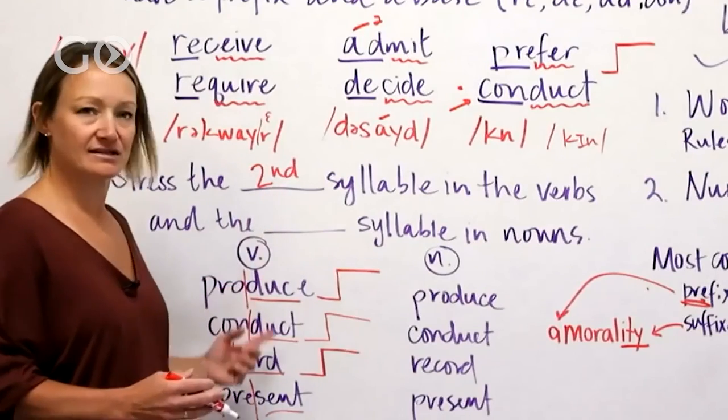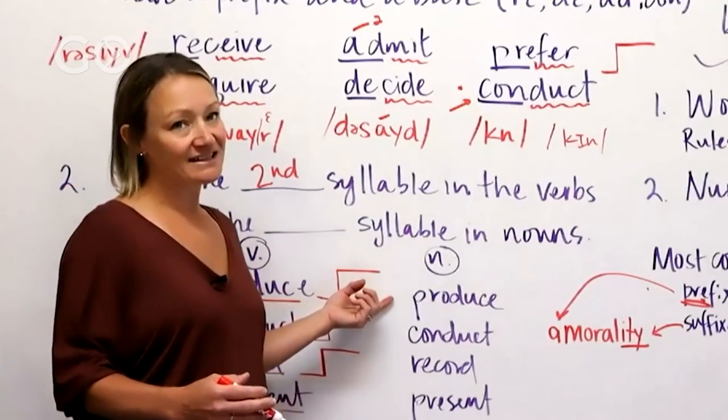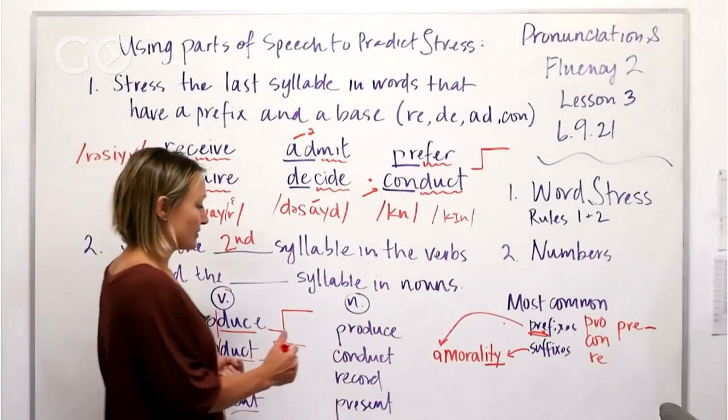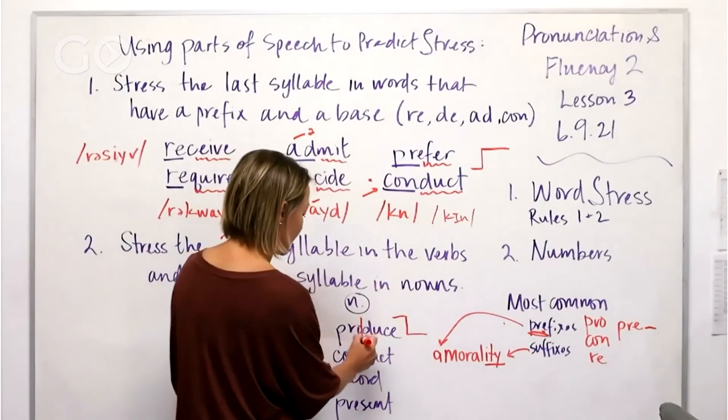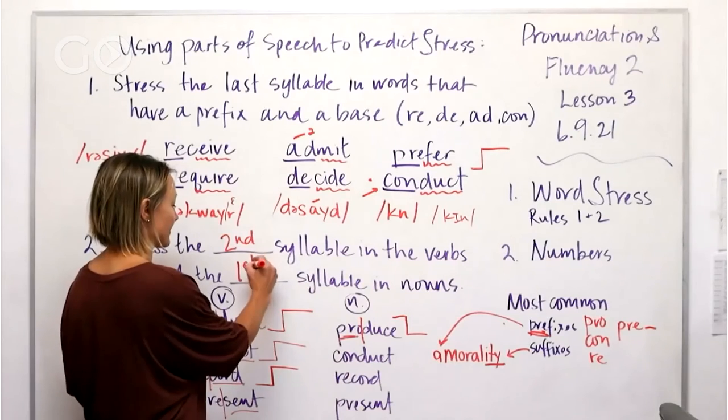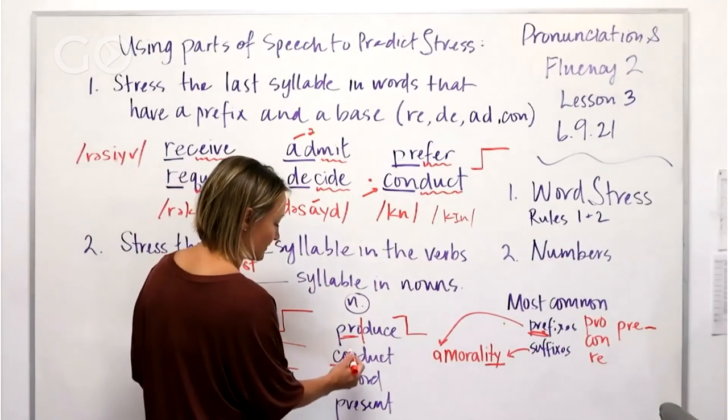When we use these identical words as nouns, we have produce, produce. So now you've got this first syllable. The stress is going to be on that first syllable. You guys probably could have guessed that from our sentence here. Conduct, conduct. The stress is here.